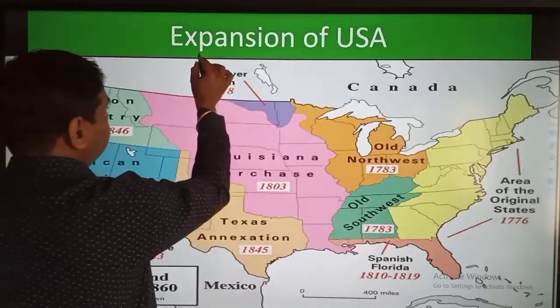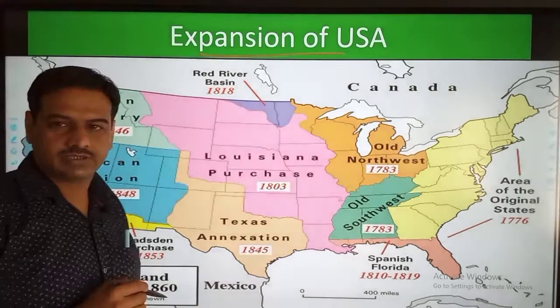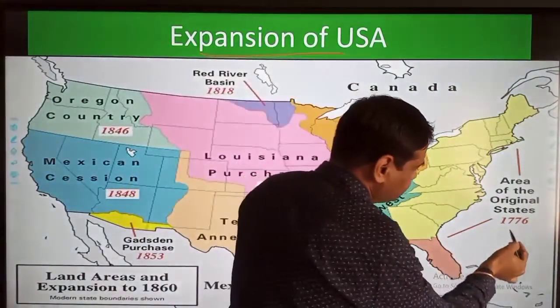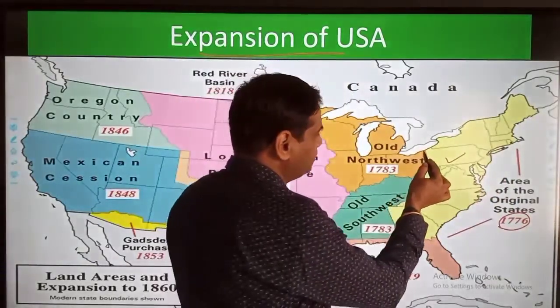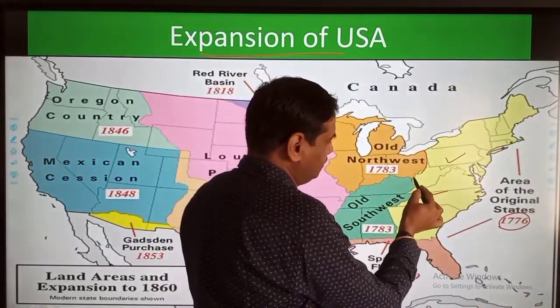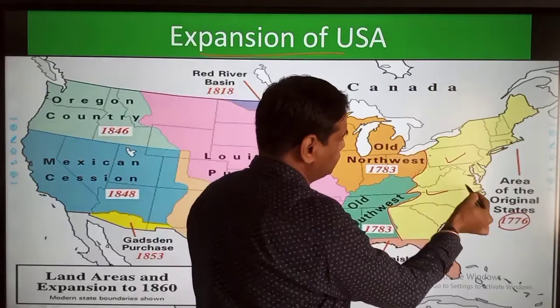We will read about the territorial expansion of USA — initially America used to be a small country but how it became quite large. What treaties and annexations were done by America, we will discuss today. You can see from the map that earlier in 1776, USA was only a small colonial country, colonized by the European people.